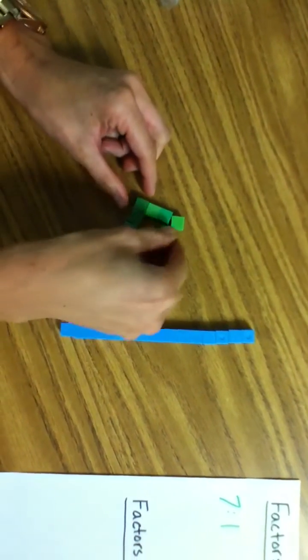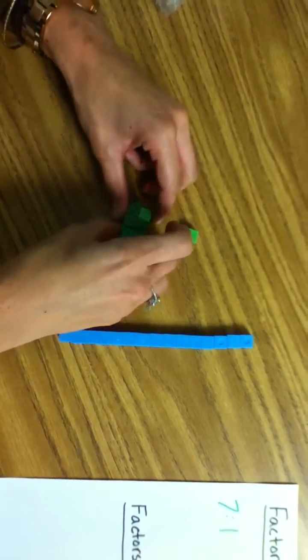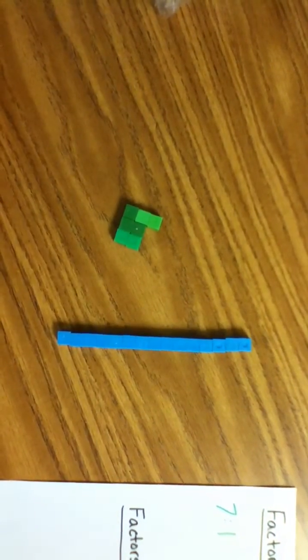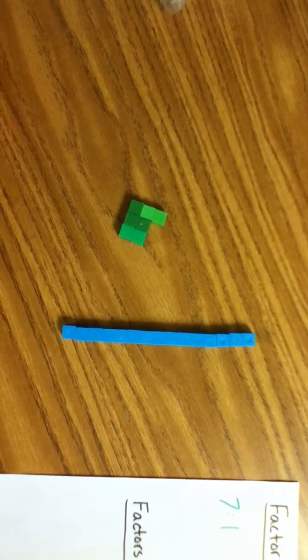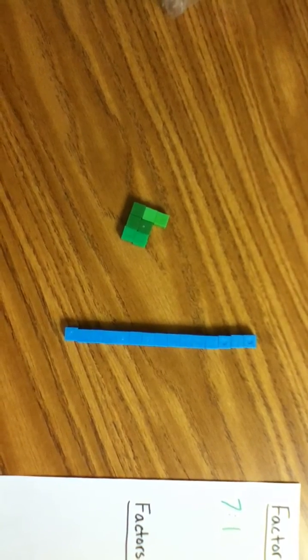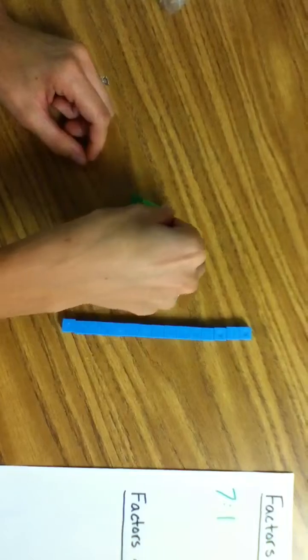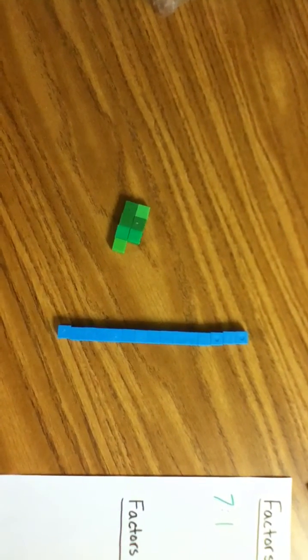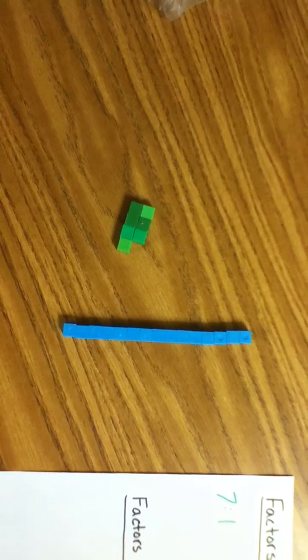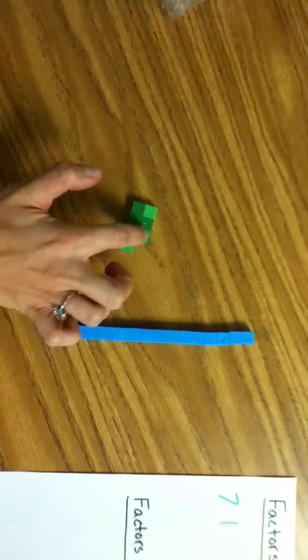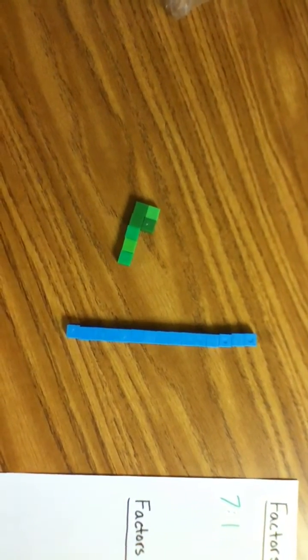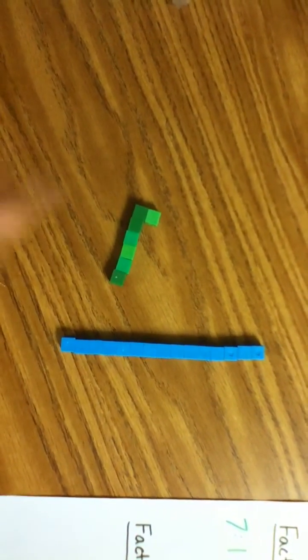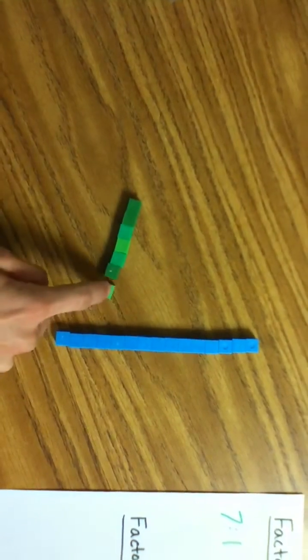So then I'll try for 3 by something. And since I have an irregular shape, I don't have a rectangle, then I know that 3 is not a factor of 7. Would you agree, Mr. Leatherwood? I would. All right, so then I'll try a 4. Again, I can't make a rectangle, I can't make an array, so 4 is not a factor of 7. I would try 5. Hmm, still not working. 6? Nope. I'm seeing a pattern. How about 7?